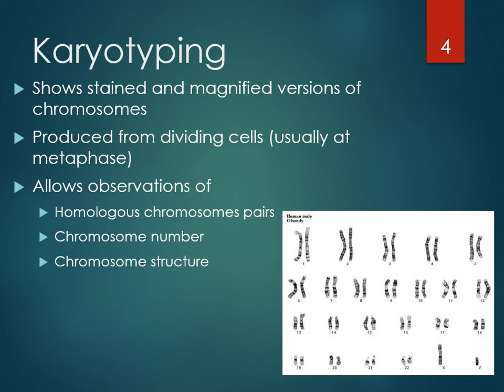A karyotype is basically taking the chromosomes out of a cell, staining them, and then trying to match them up. It's actually kind of hard because you can imagine how small they are. They used to literally stain the cells, take a picture, and sometimes cut the picture out and match them up — finding both pairs of 1, 2, all the way down to 23.